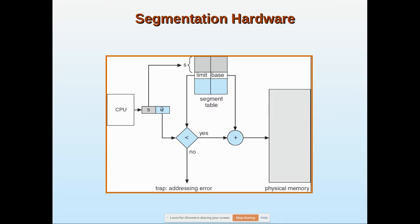The base address is taken, and the limit is also checked — whether 'd' is within the limit. Suppose the limit is 10 lines and we are accessing only the fifth line, so it is within that limit. Then, suppose the base is 1000, meaning the segment is stored starting at address 1000. So 1000 plus 5 gives 1005 — the fifth line is addressed. The offset 'd' is added to the base address.